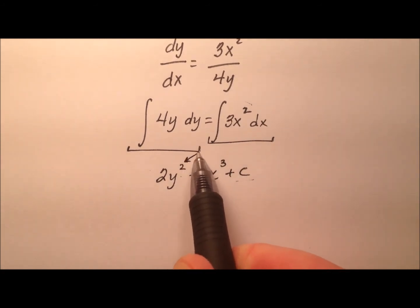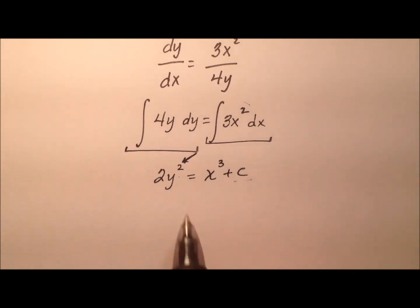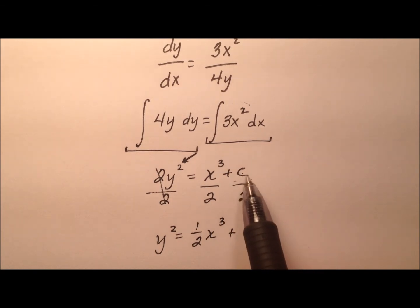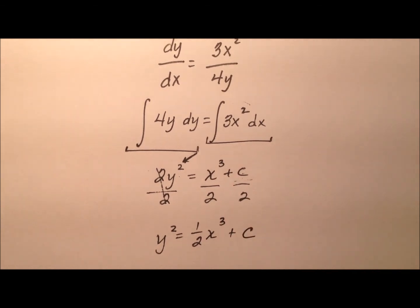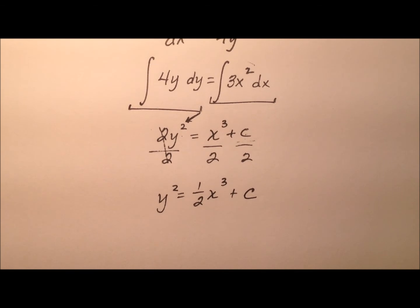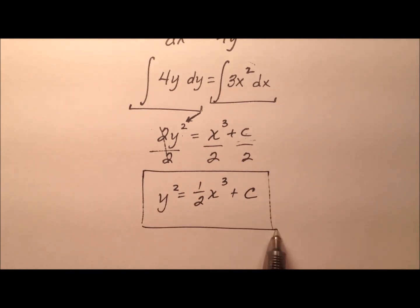So now the goal is to see if we can get this y all by itself and write this final equation in explicit form. So let's start by dividing every single term by 2. And that'll give me y² equals 1/2 x³ plus, well, it's a plus c, which is a general constant divided by 2. But a general constant divided by 2 is still just a general constant. So that's okay to do that. So we're right here.